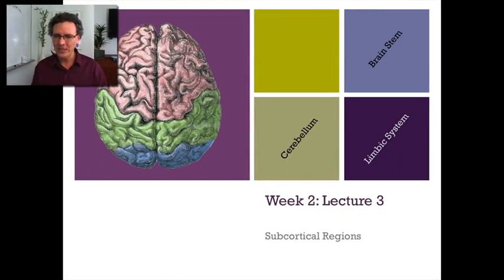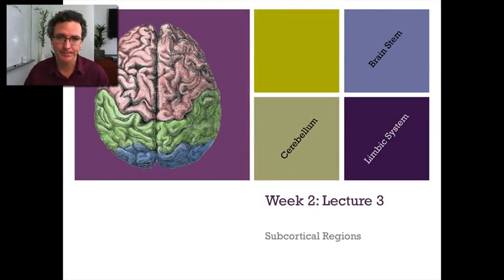Week two, lecture three: the subcortical regions of the brain. What do I mean by subcortical? We talked about all this wrinkled part on the outside of the brain - all of this is the cortex, the cortical regions. These are kind of like the mushroom cap that sits upon a stem. Today we're going to talk about some of these regions, and it's a good place to start because these are the very oldest parts of the brain.